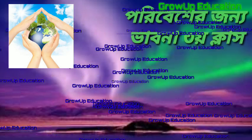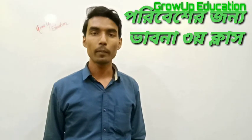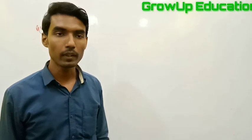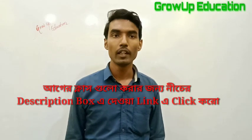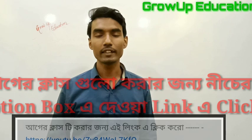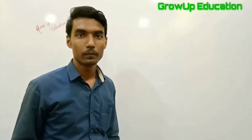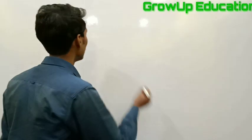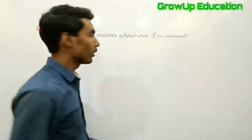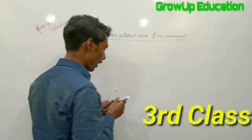Hello students. Today we are going to take a look at the 3rd class of this series. We had a basic class, and we had a class about the relationship with the troposphere. So we will see the troposphere. This concern about our environment is part 3.